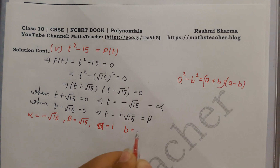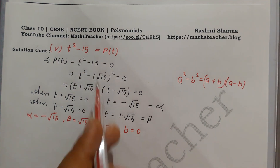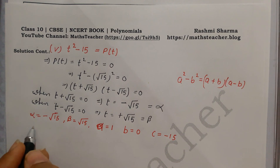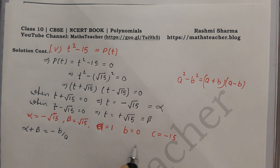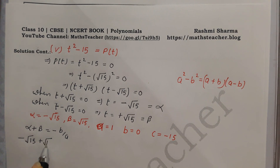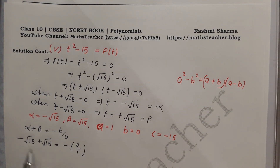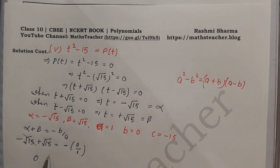The coefficient a is 1, b is 0 because there is no t term, and the constant c is minus 15. For the sum of zeros: alpha plus beta equals minus b by a. Substituting: minus under root 15 plus under root 15 equals minus 0 divided by 1. The root 15 terms cancel, giving 0 equals 0. Verified.